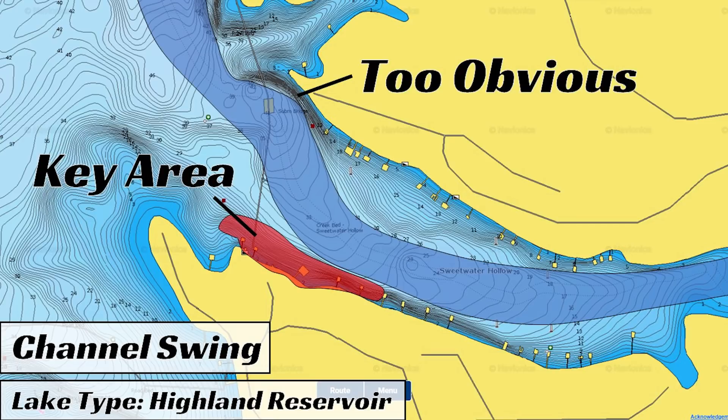Much like the secondary points we talked about at the beginning of the video, bass will tend to set up on the transitions from the steeper banks to the flatter banks on these channel swings. I find that the bass are going to set up more towards the flatter side of that channel swing when water temperatures are between 48 and 55 degrees. Then as water temperatures drop below 48 degrees and get closer to 40 degrees, they'll start transitioning closer to the steeper banks on that channel swing.